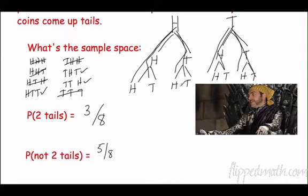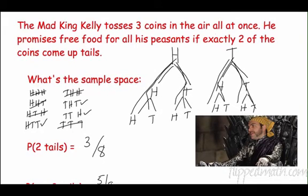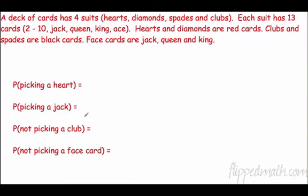That's the use of a tree diagram. For the packet, you'll need to do four coins — just add another layer to the bottom of the diagram representing the fourth toss.